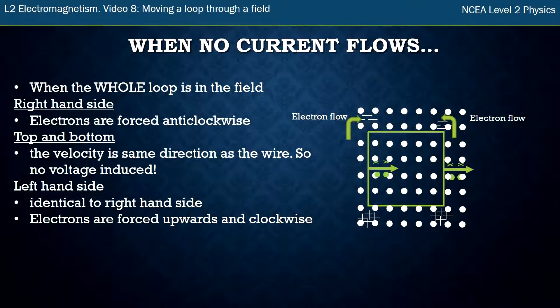But when they get to the top, the loop goes around to the right so they flow the other way. They now flow clockwise. So now you can see there's electrons flowing anti-clockwise and then there's electrons flowing clockwise. And so those electron flows cancel out and no current flows at all.